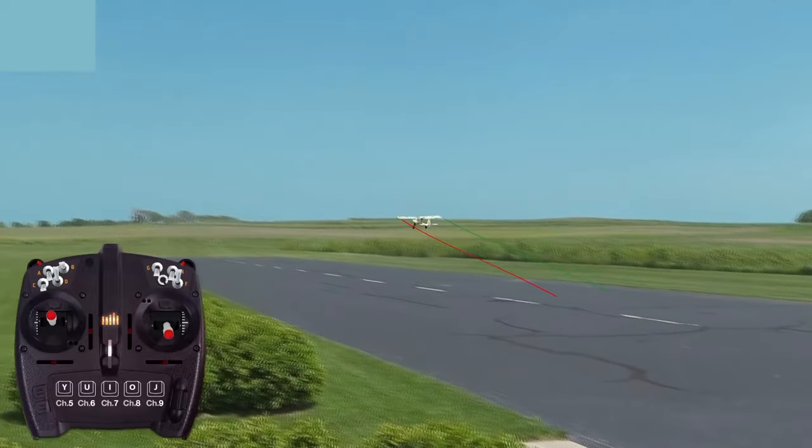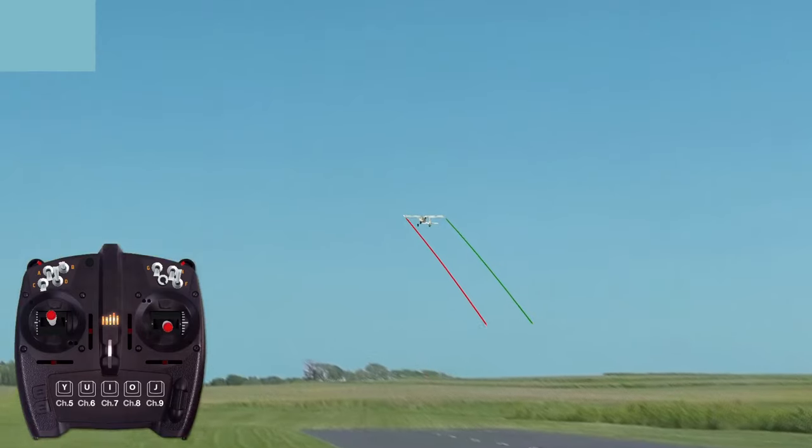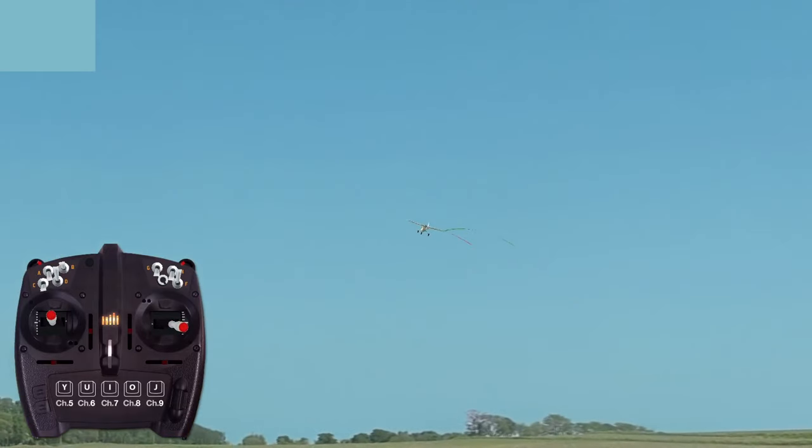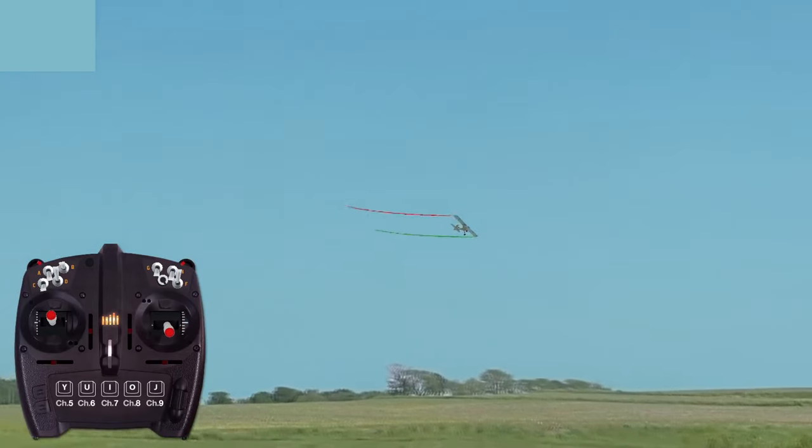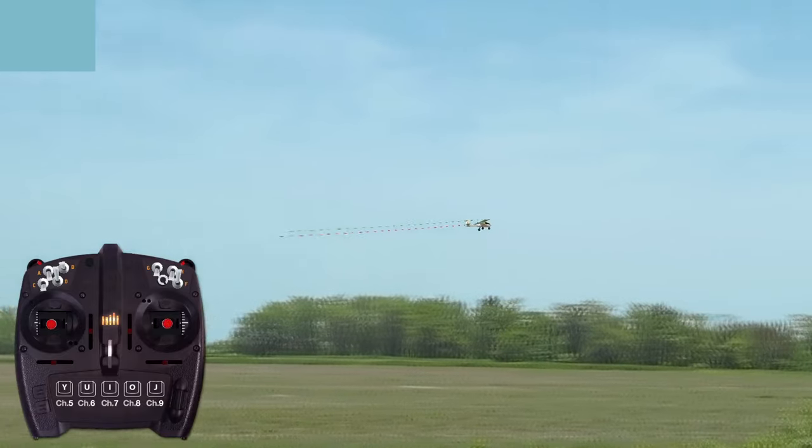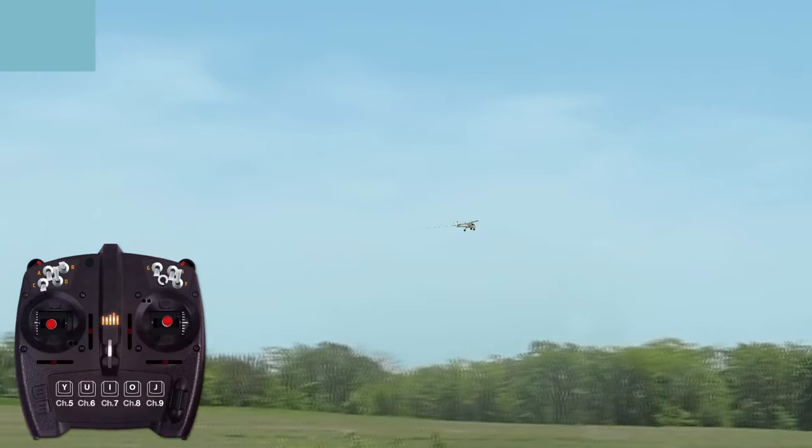The plane will not automatically climb at higher throttle settings or assume level flight when the throttle is placed to half. So the pilot must establish level flight and effect altitude changes using a combination of throttle and elevator.